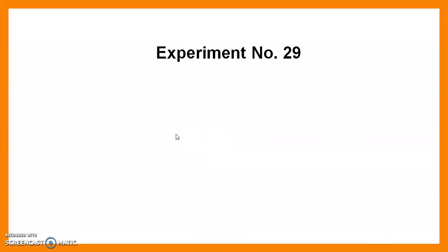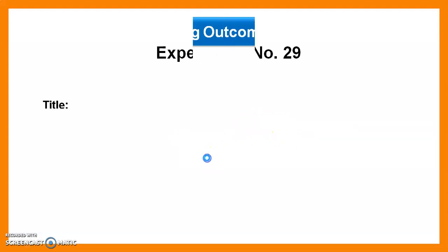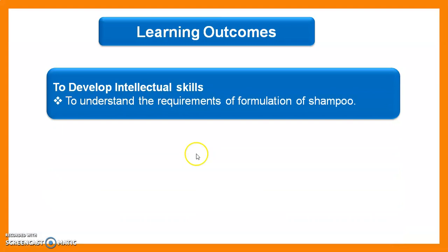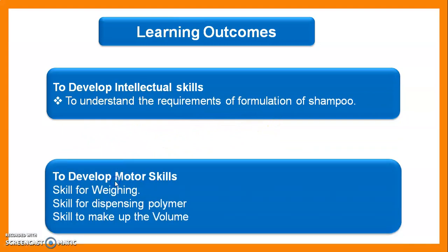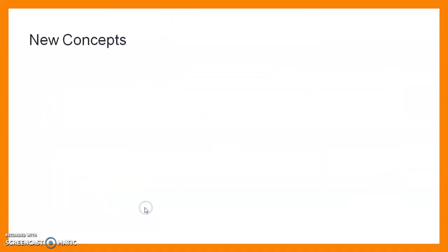The title of today's experiment is to prepare, evaluate, and submit 10 ml of clear shampoo. Learning outcomes: after watching this video, students should be able to develop intellectual skills such as understanding the requirements of a shampoo formulation, motor skills such as weighing, dispensing polymer, and making up the volume.